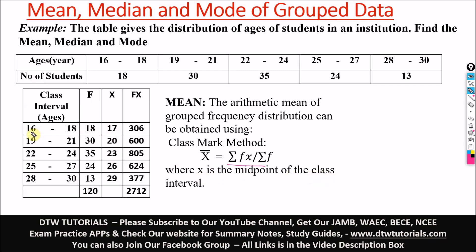Your x is the midpoint of the class interval. You get your x by doing 16 plus 18 divided by 2. For the next interval: 19 plus 21 equals 40, divided by 2 gives you 20. When you do each one you get your x values.